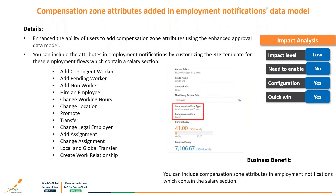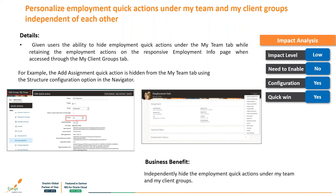Compensation zone attributes have been added to the employment notification data model. We can include these in employment notifications by customizing RTF templates. Various attributes are available such as add contingent worker, hire an employee, transfer, add an assignment, change assignment, add a non-worker, and add a pending worker. We can include all compensation zone attributes in business flows and even in the salary section. The business benefit gives an overview of compensation zone types for different businesses.